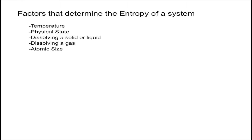In this video, I'm going to explain the five factors that determine the entropy of a system. Entropy is defined by randomness and disorder, and this disorder may change depending on some specific factors. These factors are temperature, the physical state, dissolving of a solid or liquid, dissolving a gas, and the atomic size or molecular complexity. A change in any of these factors may increase or decrease the entropy of the system, so I'll study each of them individually.